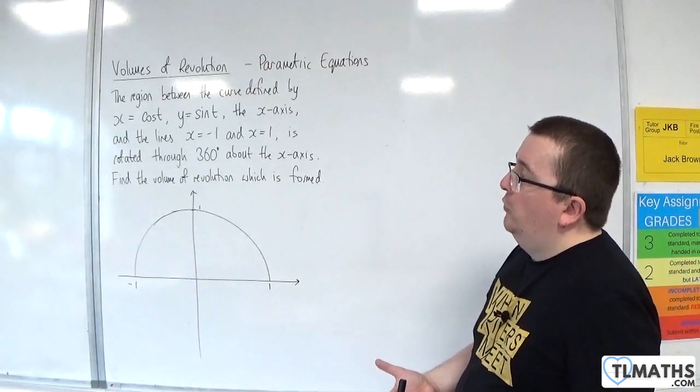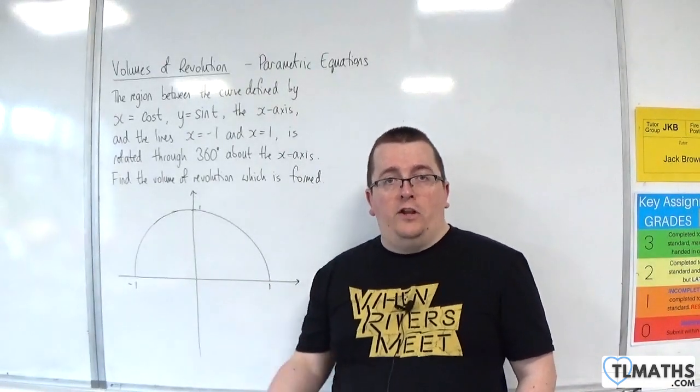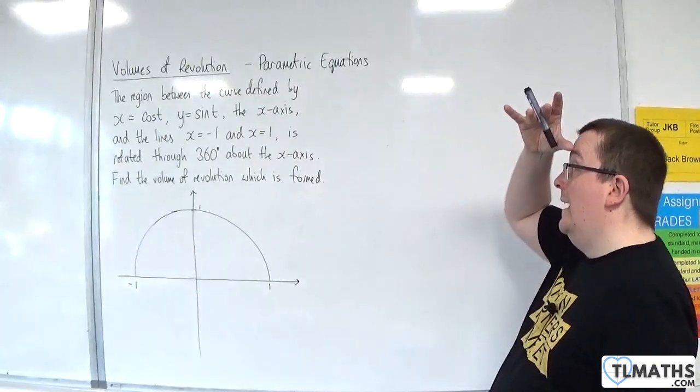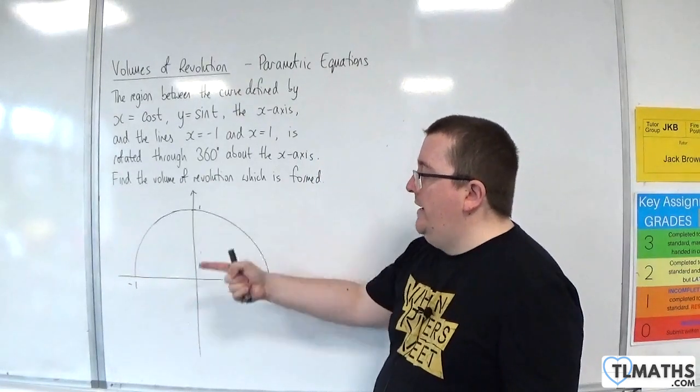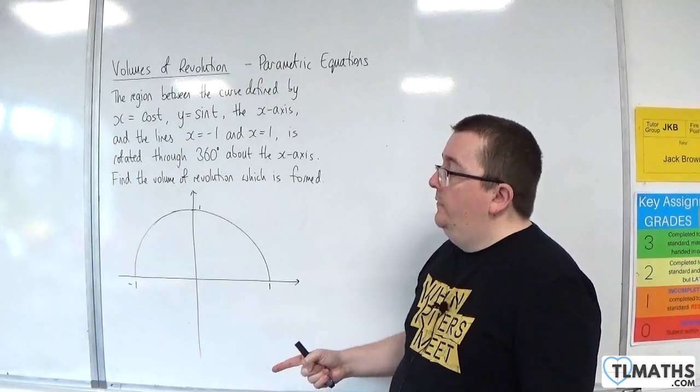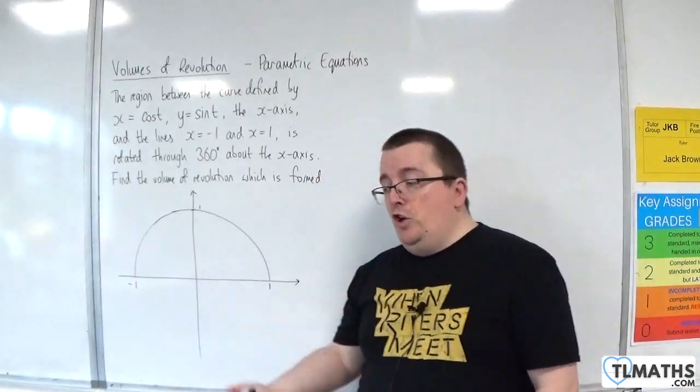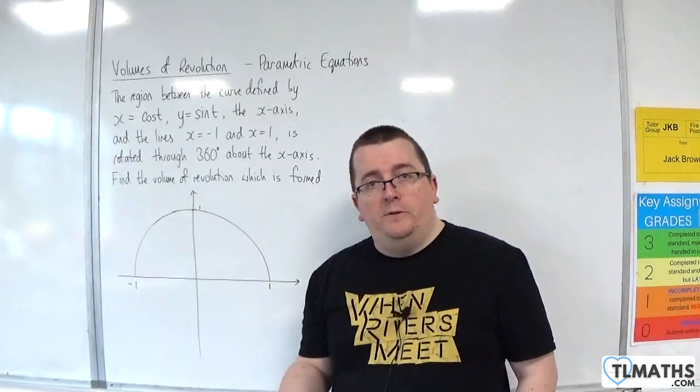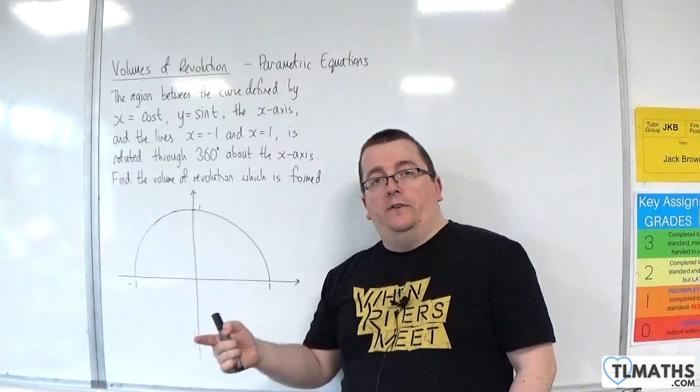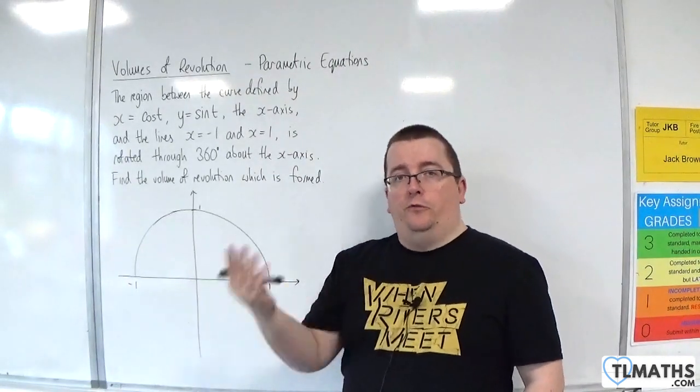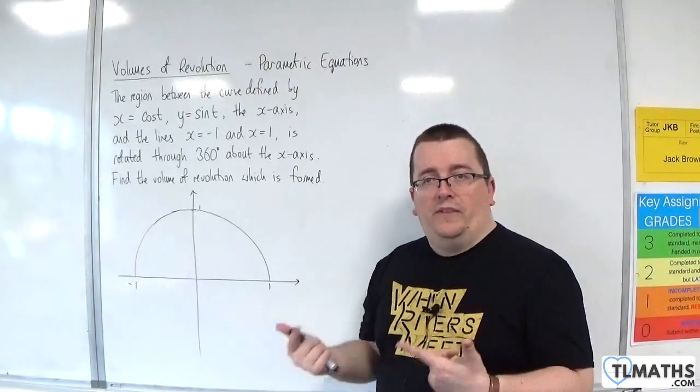Find the volume of revolution which is formed. So x equals cosine of t, y equals sine of t gives you a circle, centered at the origin with radius 1. So what we're looking at here is the half circle. And when that is rotated about the x-axis, then that is going to form a sphere. So the volume of a sphere is 4 thirds pi r cubed. So with a radius of 1, we would expect to get 4 thirds pi. So we would expect the answer to be that. So we're going to see whether the mathematics gives us that result.